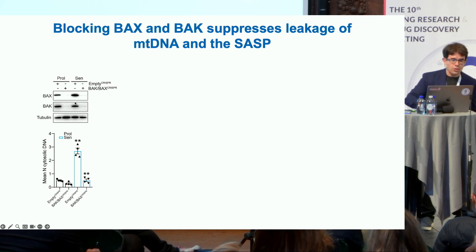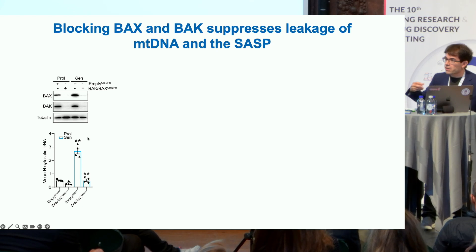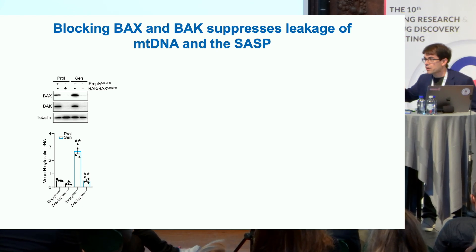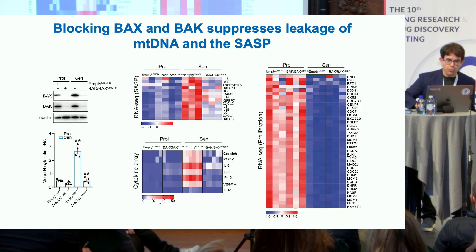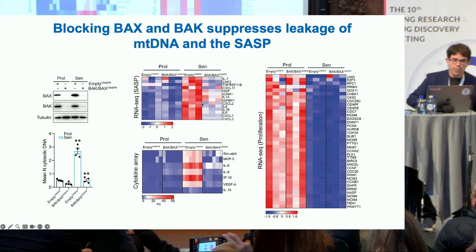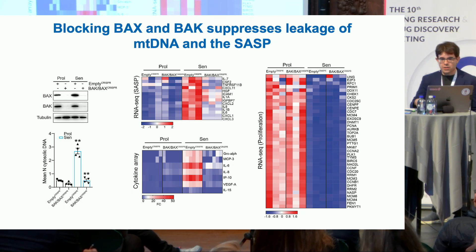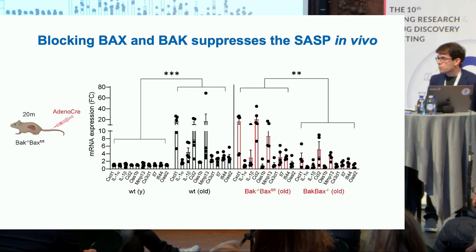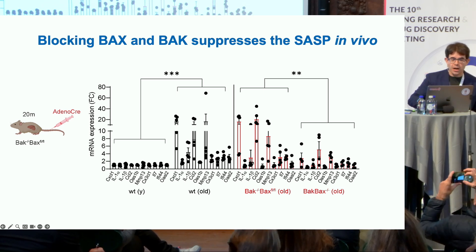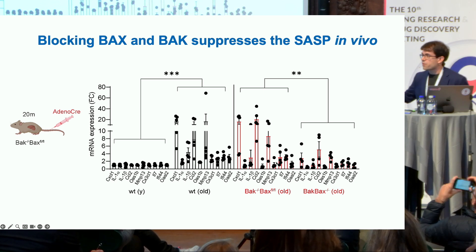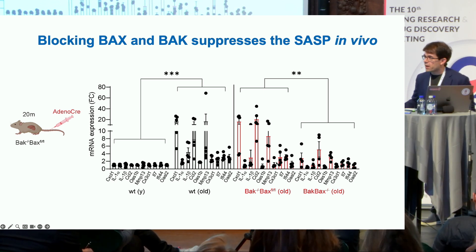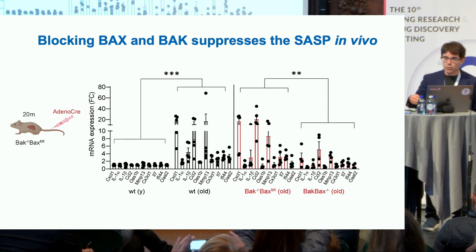To test this, we used CRISPR-Cas9 to delete both BAX and BAK, then induced senescence. Deleting BAX and BAK suppressed mitochondrial DNA leakage and suppressed the SASP at both the mRNA and protein level, while these cells remained arrested — proliferation was not affected, confirming this pathway specifically drives the SASP. In mouse experiments, we conditionally deleted both BAX and BAK in aged mice and found that SASP factors decreased in the liver and bone.